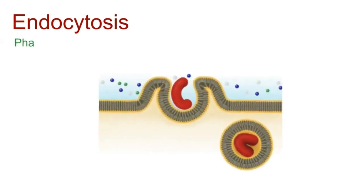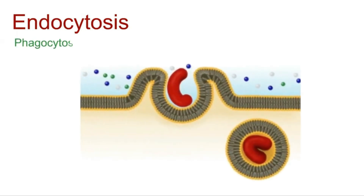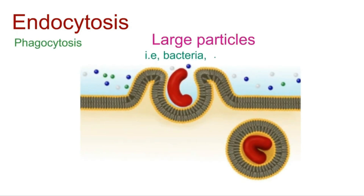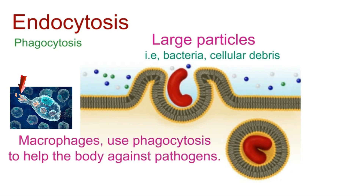First, I will discuss phagocytosis. Cells engulf large particles like bacteria or cellular debris. Specialized immune cells, such as macrophages, use phagocytosis to help defend the body against pathogens.